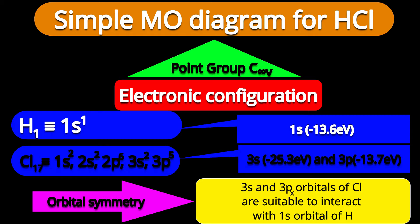Regarding energetics: the 1s orbital of hydrogen and the 3s orbital of chlorine are separated by only about 12 eV, so they are suitable to interact. For the 3p orbital of chlorine, there is nearly the same energy as hydrogen 1s — no question, it will interact. Among the 3p orbitals, it is 3px that interacts (bonding axis). The 3s and 3px orbitals of chlorine are suitable to interact with the 1s orbital of hydrogen; remaining orbitals of chlorine, including 3py and 3pz, will remain non-bonding.